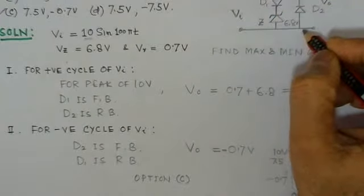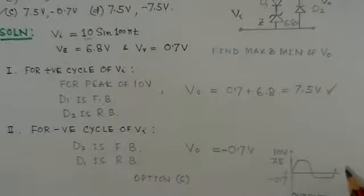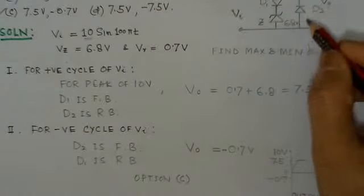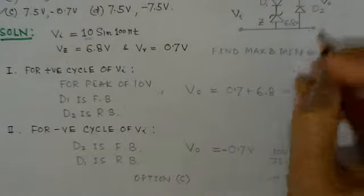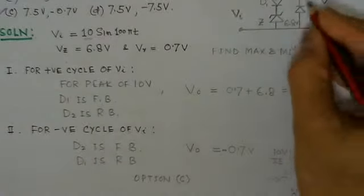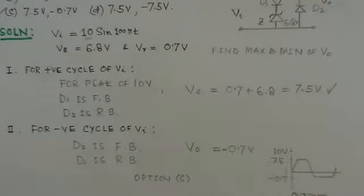Only this would be conducting. When this is conducting, that means it will have its cut-in voltage of 0.7 volts. It is having the opposite polarity, so it would be minus 0.7 volts. So the output will appear to be minus 0.7 volts.